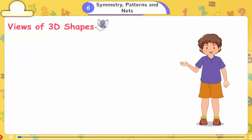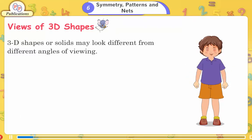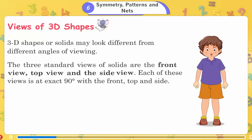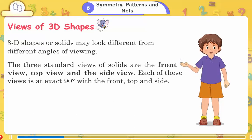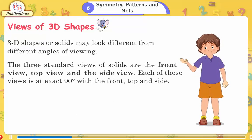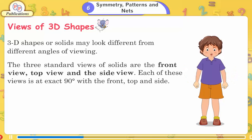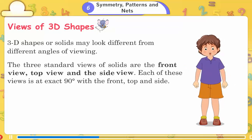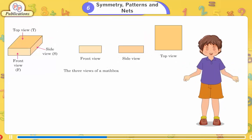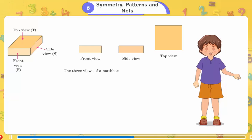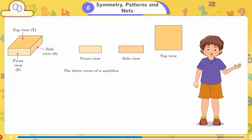Views of 3D shapes. 3D shapes or solids may look different from different angles of viewing. The three standard views of solids are the front view, top view and the side view. Each of these views is at exact 90 degrees with the front, top and side. Top view T, Side view S, Front view F. Front view, side view, top view. The three views of a matchbox.